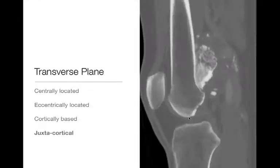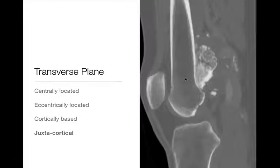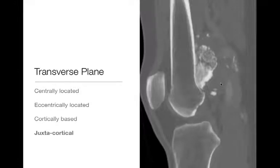Next is juxtacortical. By juxtacortical, we mean the tumor is arising next to the cortex — the cortex itself is preserved and the medullary space is preserved. Things that do this include periosteal osteosarcoma or juxtacortical chondroma. As you can see on the CT scan, the cortex — the thick sclerotic line right here — is right up next to the tumor. The medullary space does not appear involved, and there is a dense osteoid matrix with a soft tissue component. This is a classic example of a parosteal osteosarcoma in a juxtacortical location, a favorite spot being the distal femur.